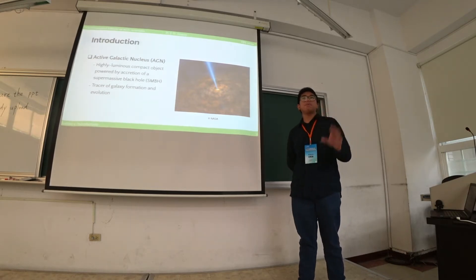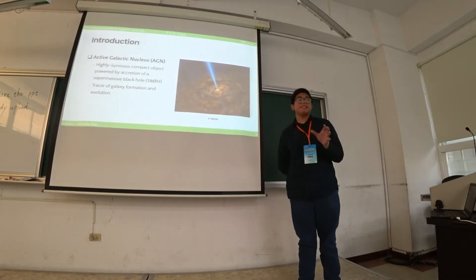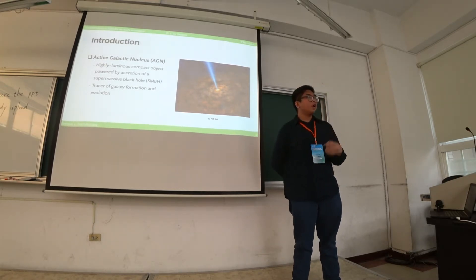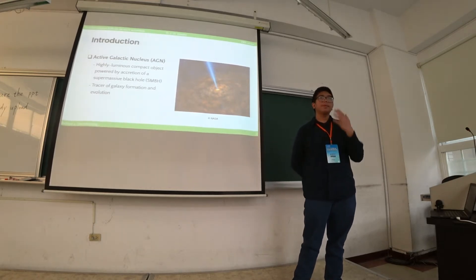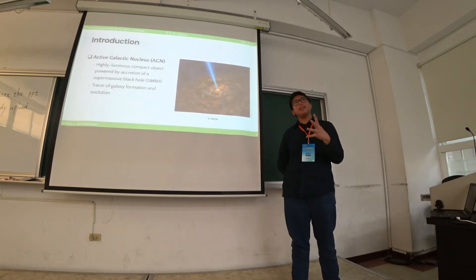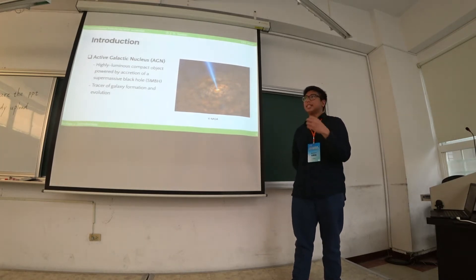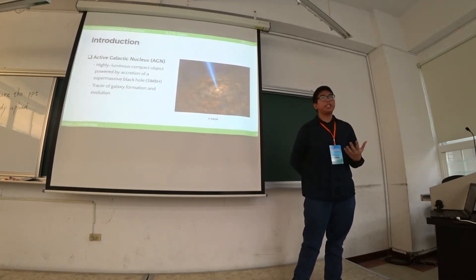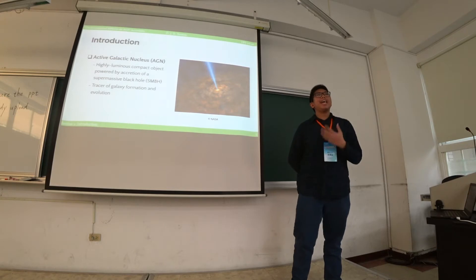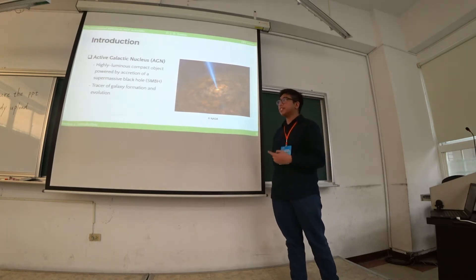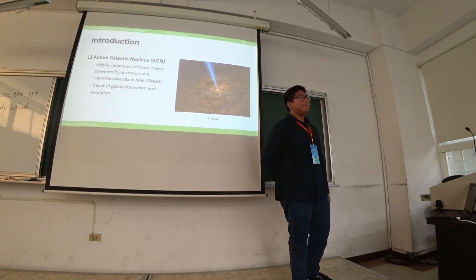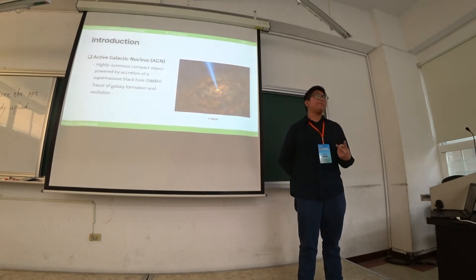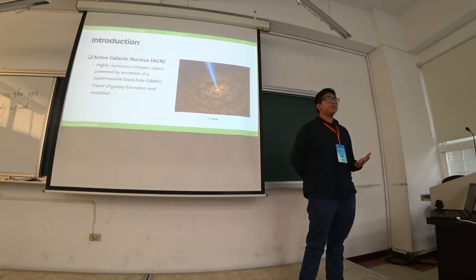We believe that most galaxies have a supermassive black hole residing in their center. These black holes accrete or collect materials along the way, and due to the viscosity of the collected materials, this causes an emission of radiation. The physical manifestation of this emission is the AGN. AGNs are believed to be tracers of galaxy formation and evolution, because the AGN and the supermassive black hole grow together with the galaxy.